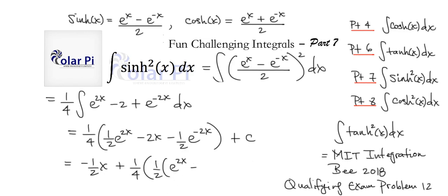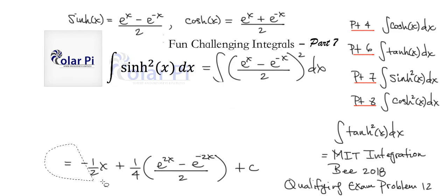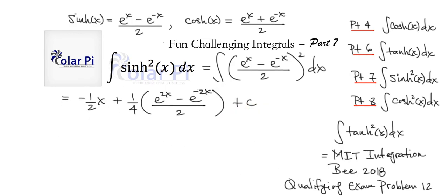Now I'm going to distribute the 1/4 only to the middle term and lead with that: 1/4 times minus 2x gives minus 1/2 x. And keeping the 1/4 factored out for the remaining terms, we've got 1/4 times 1/2 times e to the 2x minus e to the negative 2x, plus C. We could write that as e to the 2x minus e to the negative 2x divided by 2, and notice this is just sinh(2x). So our final answer is minus 1/2 x plus 1/4 sinh(2x) plus C.